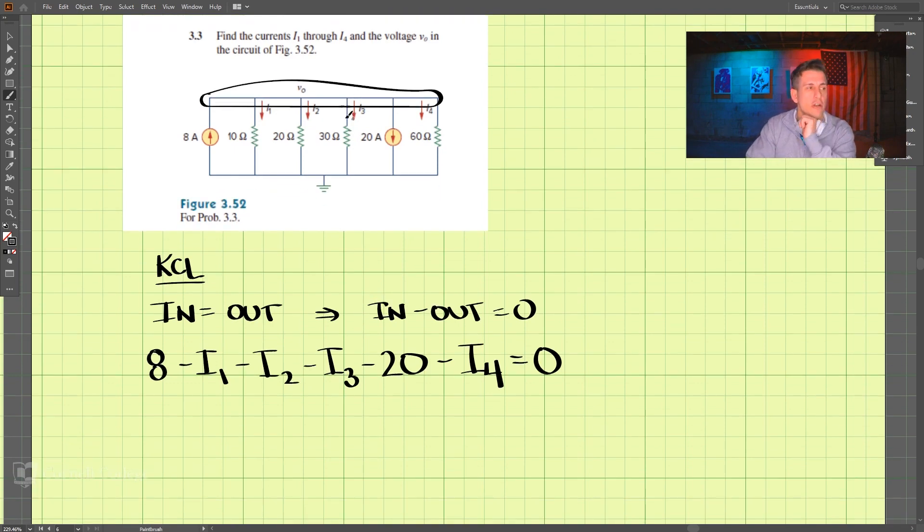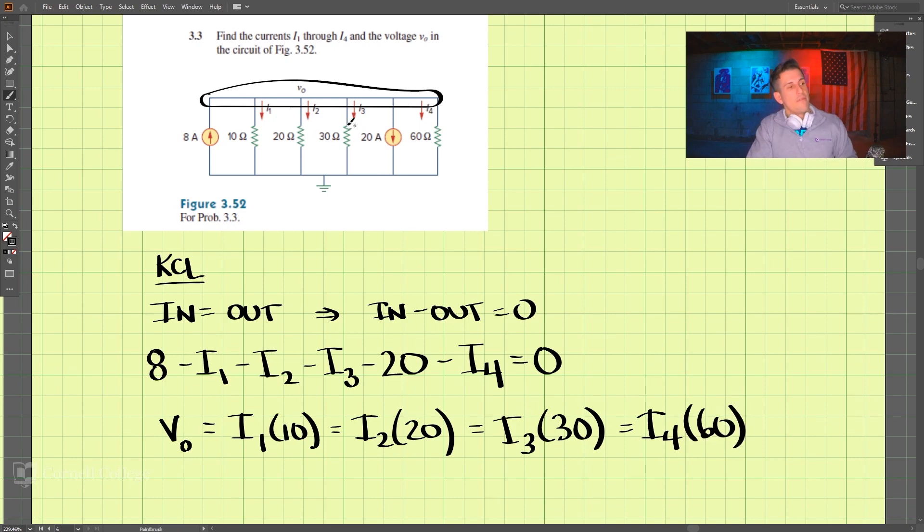Well, the other thing we can take a look at is our V0. We know that that is equal to the current, like I1, times the resistance that's flowing through I1, so we know that's I1 times 10, but it's also equal to I2 times 20, and that is equal to I3 times 30, which is equal to I4 times 60. So we have all of these currents times the resistances to equal the voltage.